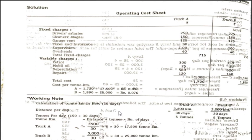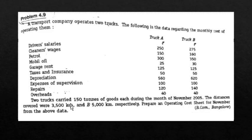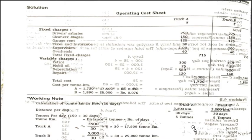To find distance per day, we divide total kilometers by number of days. We take 30 days unless stated otherwise. The total kilometers given are 3,500 kilometers for truck A and 5,000 kilometers for truck B. So 3,500 divided by 30 gives 116.667, and 5,000 divided by 30 gives 166.67. These are the kilometers traveled per day by truck A and B respectively.